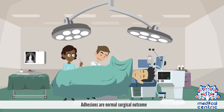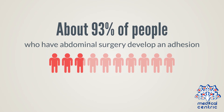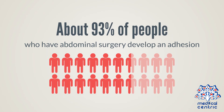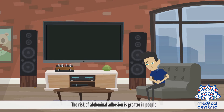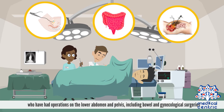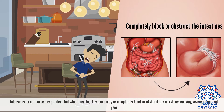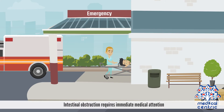Adhesions are a normal surgical outcome. About 93% of people who have abdominal surgery develop an adhesion. The risk is greater in people who have had operations on the lower abdomen and pelvis, including bowel and gynecological surgery. Adhesions do not always cause problems, but when they do, they can partly or completely block or obstruct the intestines, causing severe abdominal pain. Intestinal obstruction requires immediate medical attention.